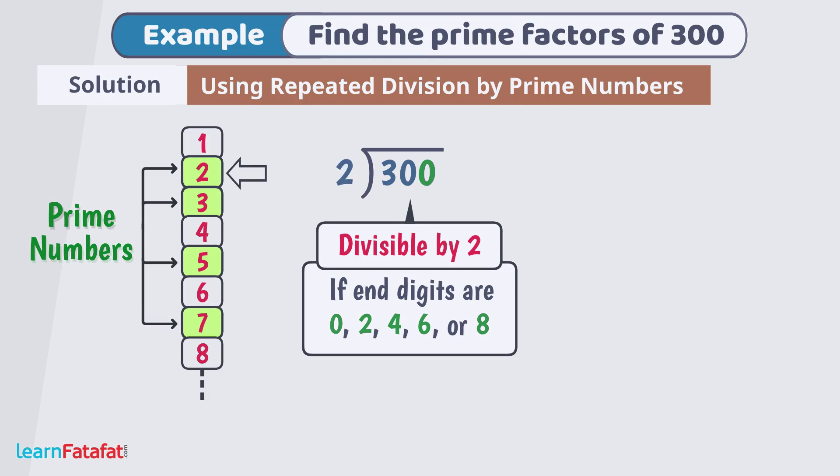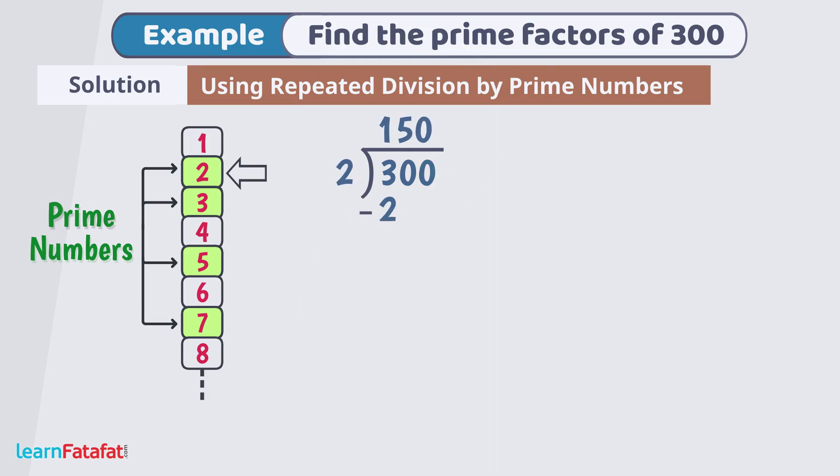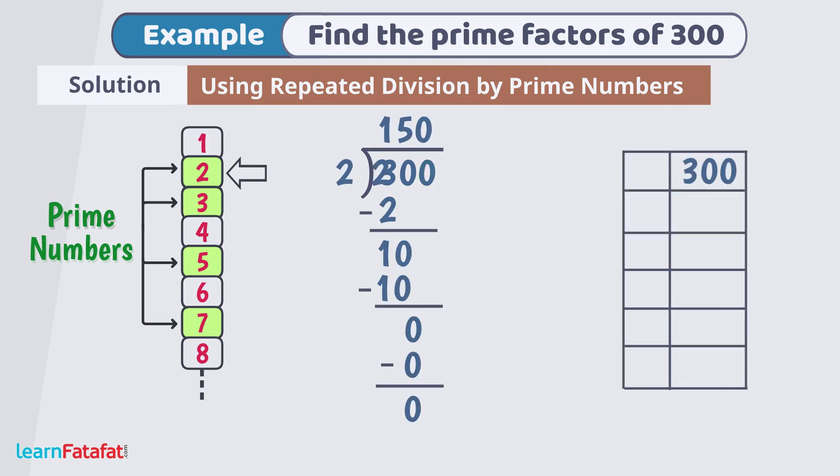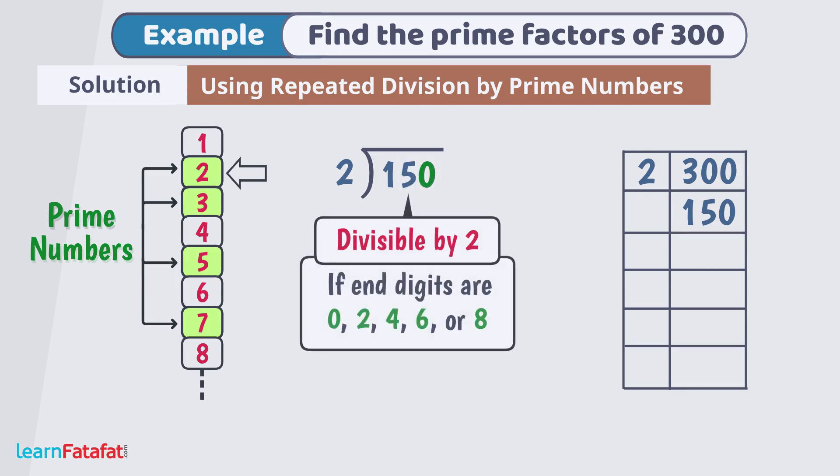Dividing 300 by 2, we get quotient 150. Write 2 here and quotient 150 here. Again, 150 also has last digit 0, so it is also divisible by 2.